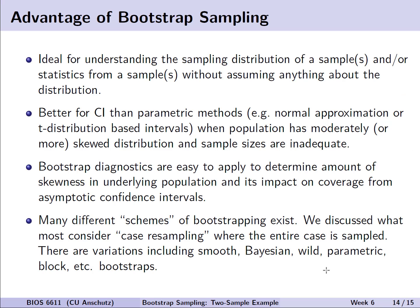What are some of the advantages we could use for bootstrap sampling? First, it's ideal for understanding the sampling distribution of a sample or multiple samples and or statistics from a sample or multiple samples without assuming anything about the true underlying distribution, or it might be a case where it doesn't fit nicely into one of the known distributions we have.